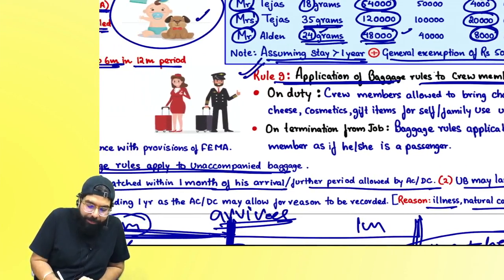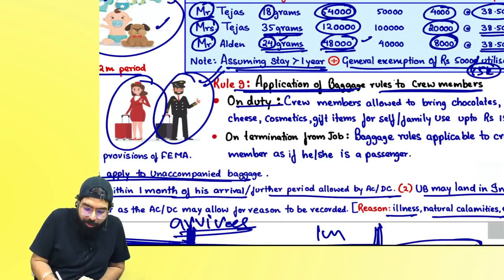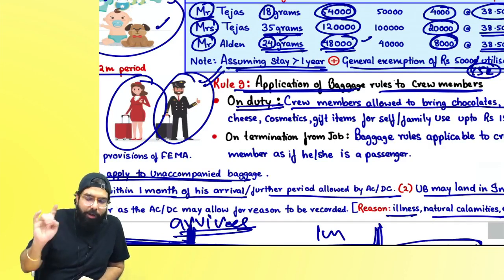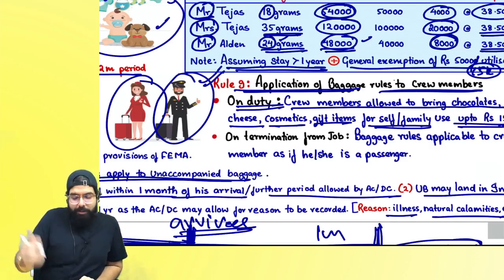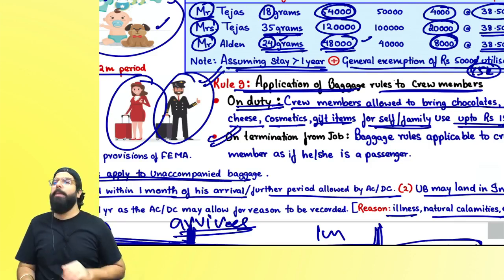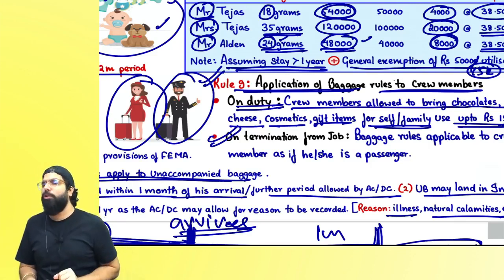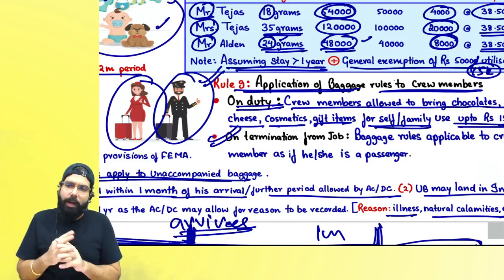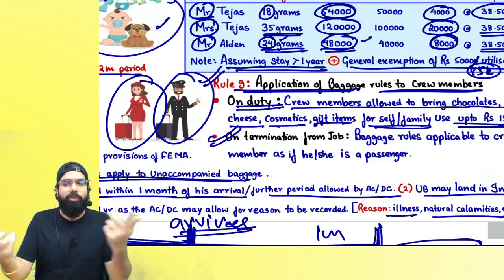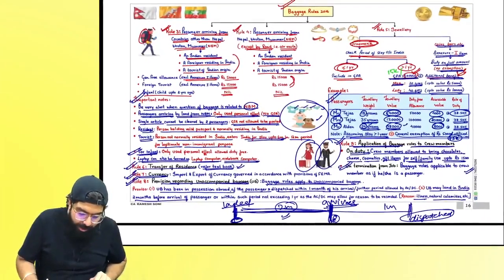Rule 9 is applicable to crew members. When crew members — air hostesses, pilots, etc. — are on duty, they are allowed to bring only chocolates, cheese, cosmetics, and gift items for self and family use up to 2,500. However, on termination of duty, baggage provisions as applicable to a passenger apply to crew members also — the 15,000 or 50,000 limit will be applicable when they terminate the job.